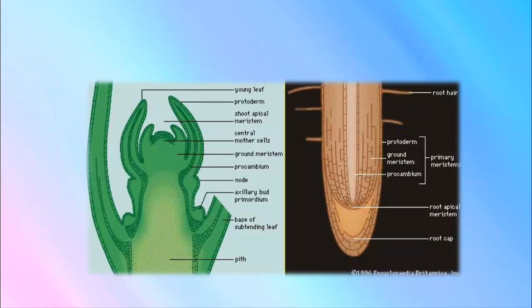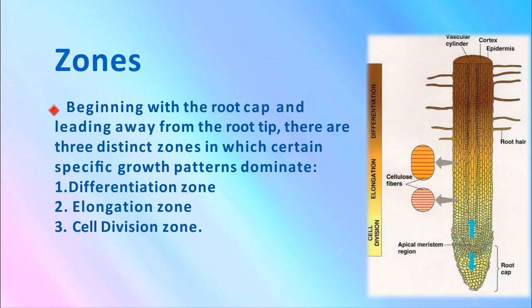You can observe here in the diagram: leaf, young protoderm, shoot apical meristem, central mother cell, ground meristem, procambium, node, axillary bud, and base. Beginning with the root cap and leading away from the root tip, there are three distinct zones in which certain specific growth patterns dominate: differentiation zone, elongation zone, and cell division zone.